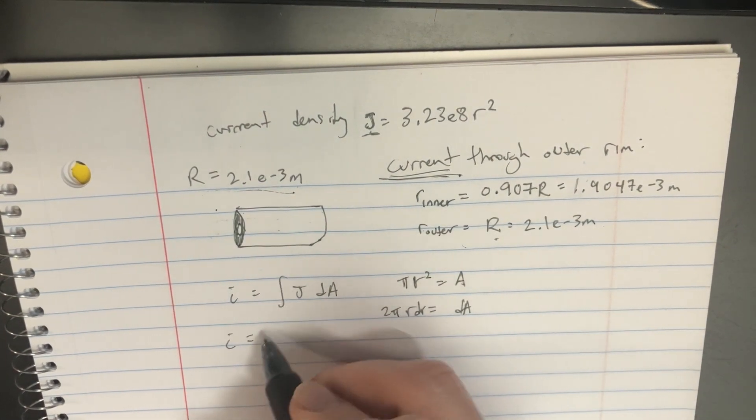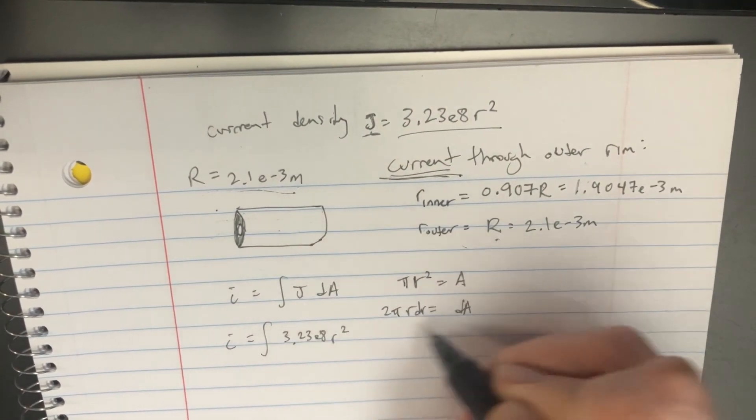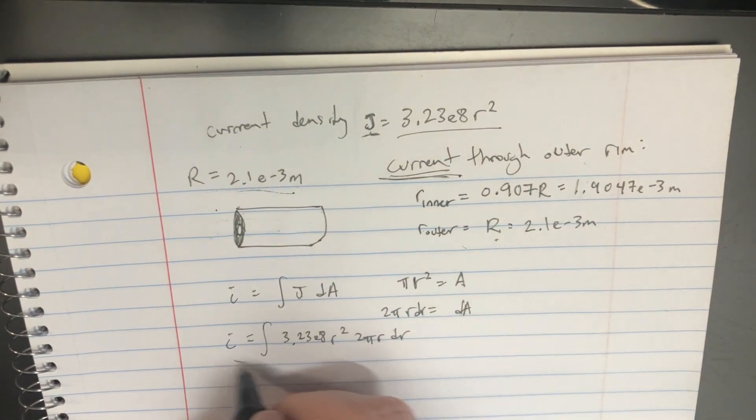So we'll get i equals - what's j? It's 3.23e8 r². Plug that in: 2πr dr. That's our integral.